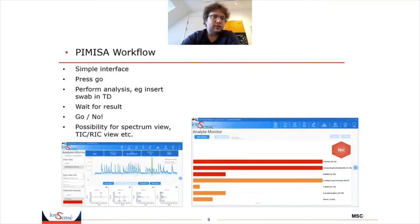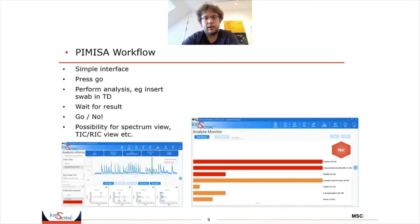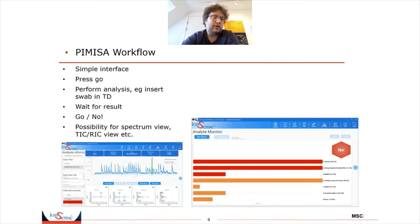The Pimisa workflow is very easy and simple. You press go when you perform the analysis — for example, inserting the swab into the thermal dissolver — then you wait for the result. It pops up with either a red marker saying 'no,' meaning something illegal is present in the sample, or a green marker saying 'go,' meaning nothing suspicious was found. You can look at the spectra if you want, or just use the simple interface depending on your level of expertise.